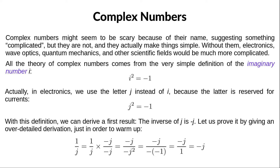The first thing we can do with this is to derive our first result, which is that the inverse of j is equal to negative j. Starting from 1 over j, we can multiply both the numerator and the denominator by negative j. So we obtain negative j over negative j squared, but by definition j squared is equal to negative 1, so we can simplify and we end up with negative j.